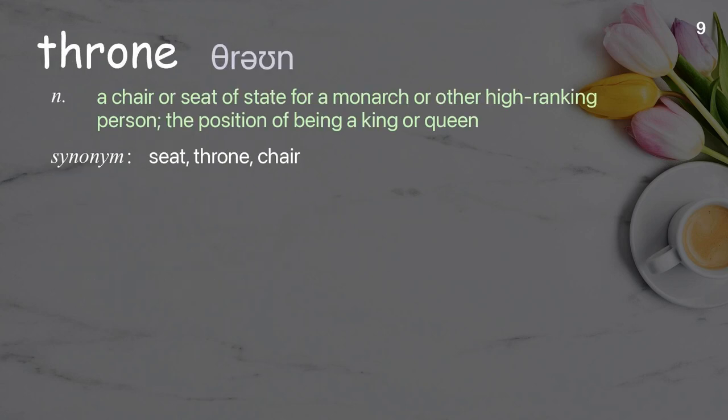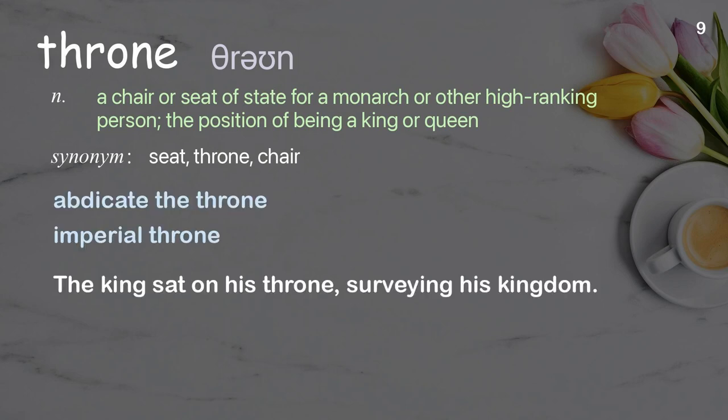Throne: A chair or seat of state for a monarch or other high-ranking person; the position of being a king or queen. Examples: abdicate the throne, imperial throne. The king sat on his throne, surveying his kingdom.